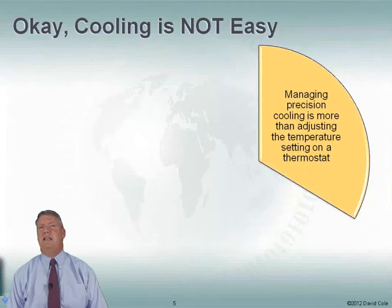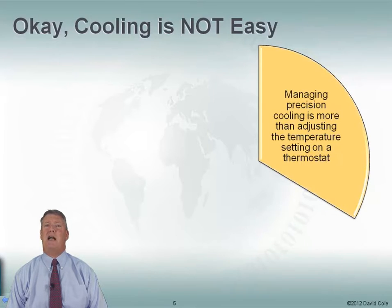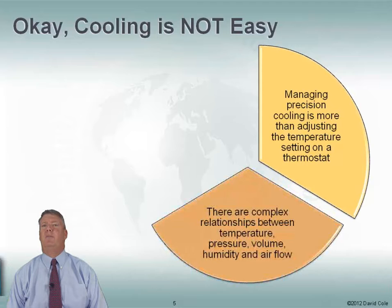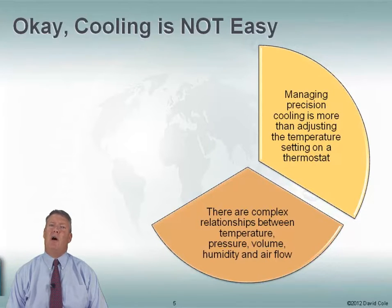Maybe I was wrong. Maybe cooling isn't easy — there's a lot involved. Managing precision cooling is more than just adjusting the temperature setting on a thermostat. It's more than just walking through and saying it's hot in here, let's turn down the AC. Because we have to worry about humidity and some other things as well. There are very complex relationships between temperature, pressure, volume, humidity, and airflow. If we get any of those wrong, it's really going to hurt us on how well we're cooling in the data center.